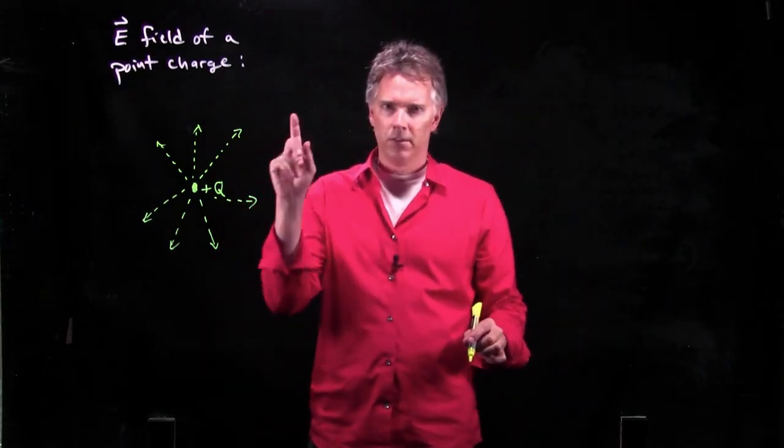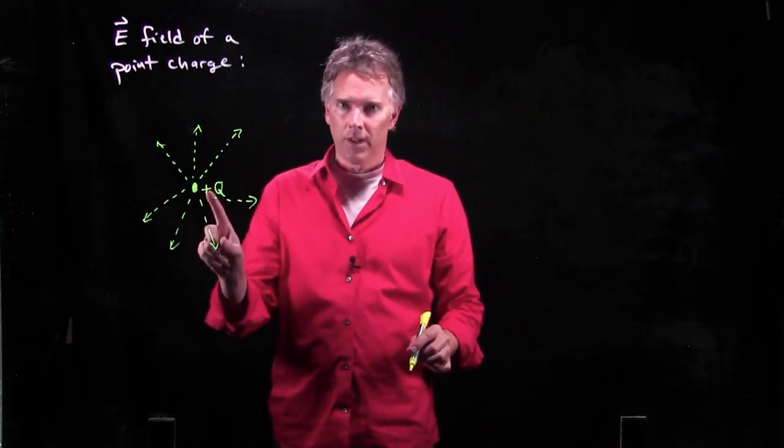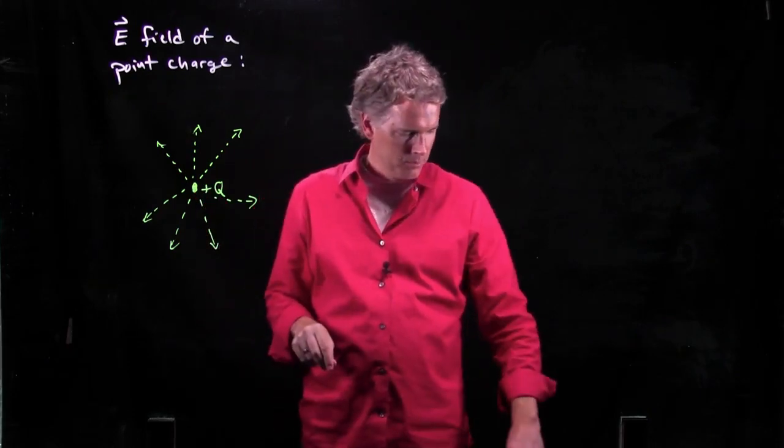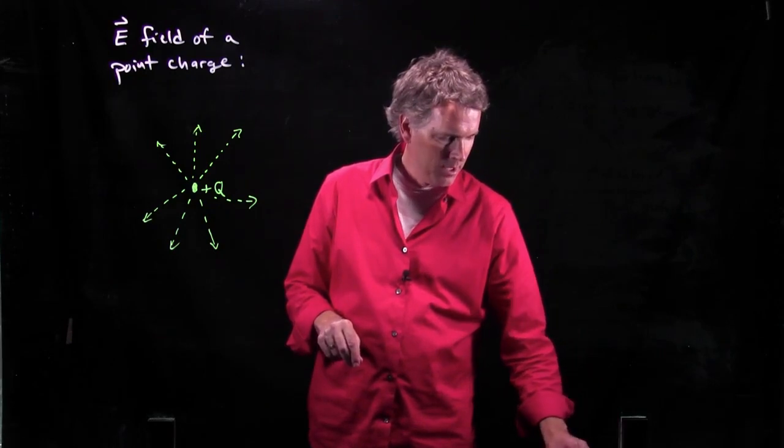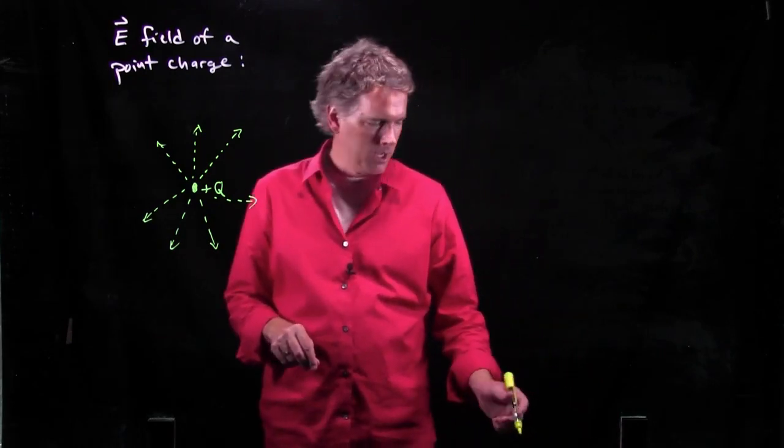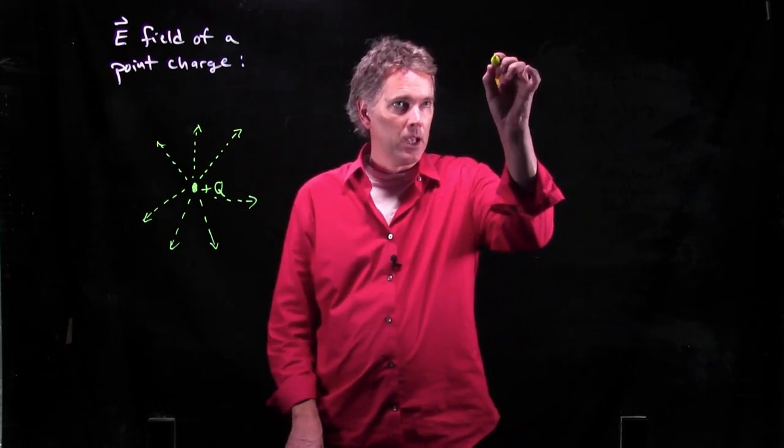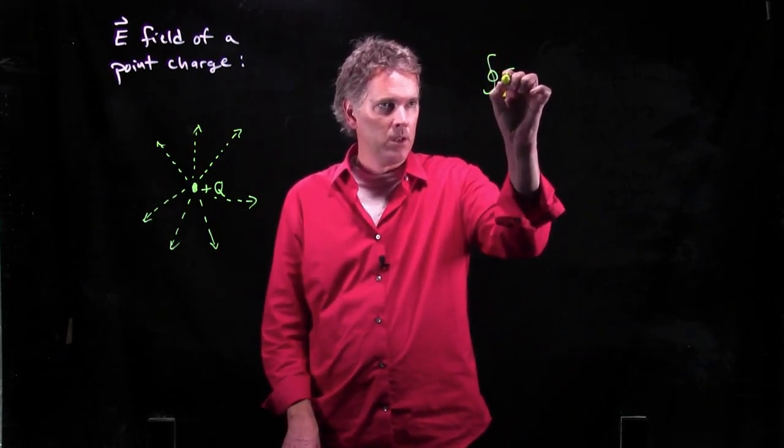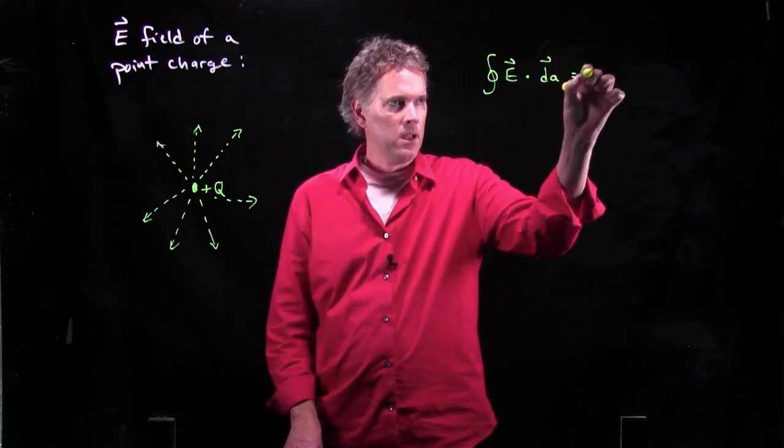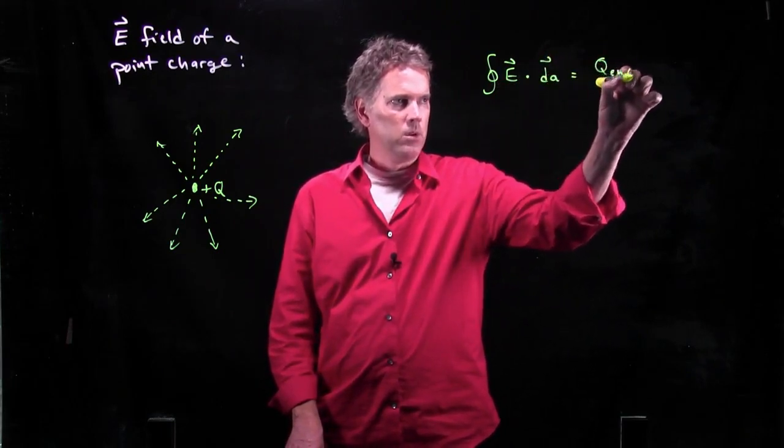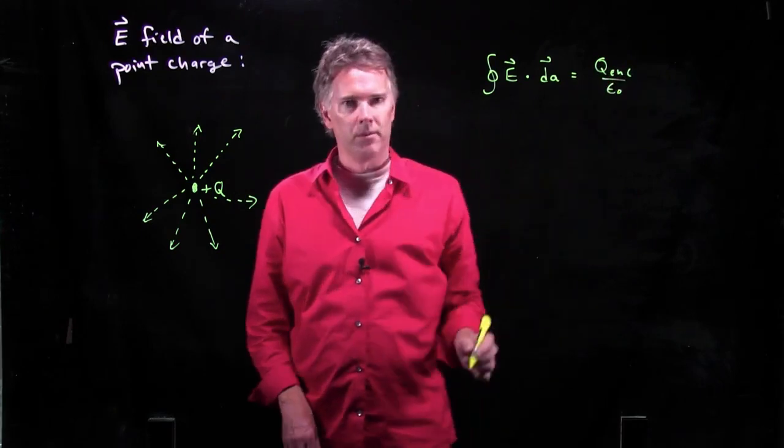How do we calculate this E field using Gauss's law? What is the approach? Well, the first thing we do is we write down Gauss's law. So we know exactly what Gauss's law is. Gauss's law is the following: integral E dot dA equals Q enclosed over epsilon naught.